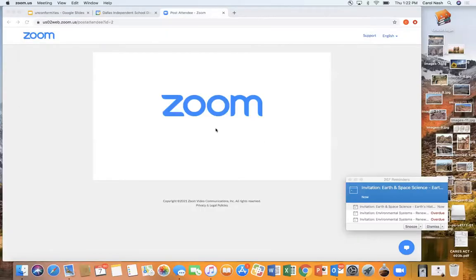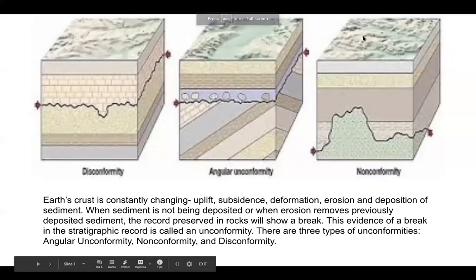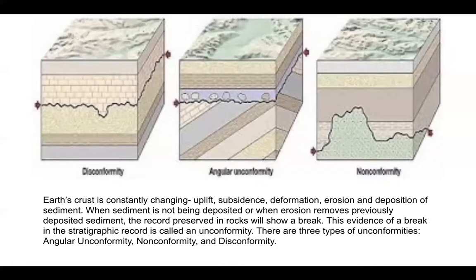Unconformities are things that are somehow different than what we would expect — they don't go along with our regular rules. The crust is constantly changing through uplift, subsidence, deformation, erosion, and deposition of sediment. When sediment is not being deposited, or when erosion removes previously deposited sediment, the record in the rocks will show a break. In some cases, this break can represent billions of years of missing rock. The evidence in the stratigraphic record is called an unconformity, and there are three kinds: angular unconformity, nonconformity, and disconformity.